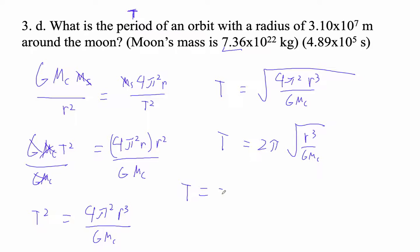So T is going to be, and then r is 3.1 times 10 to the 7th, raised to the 3rd. Denominator is 6.67 times 10 to the minus 11th, right? And then the mass, the moon's mass is 7.36 e22. Okay, so times 7.36 e22.